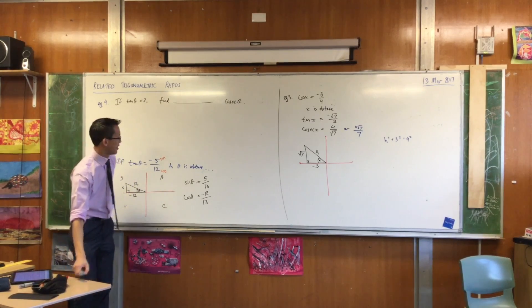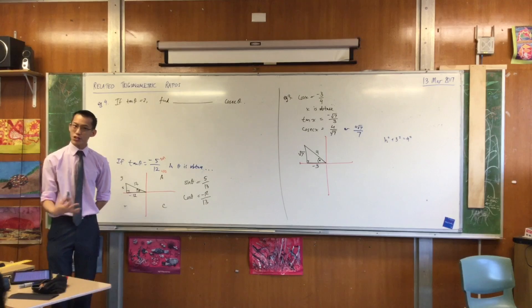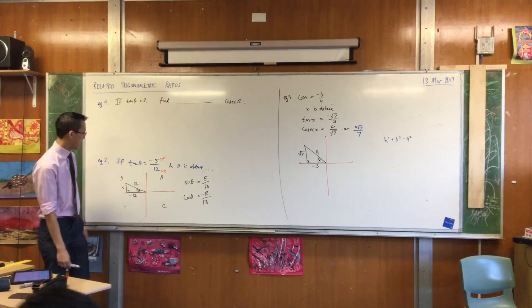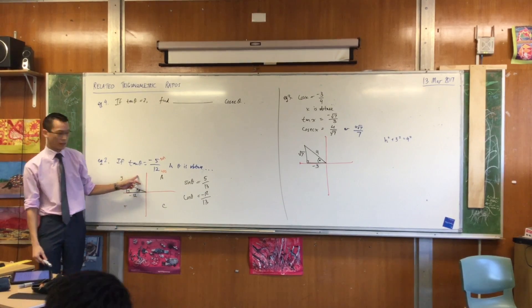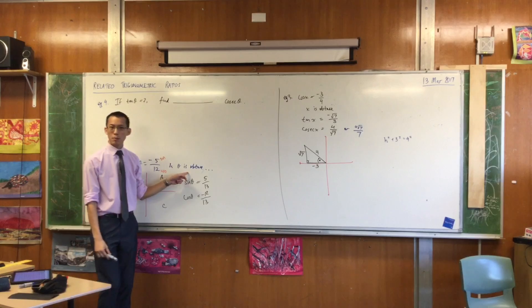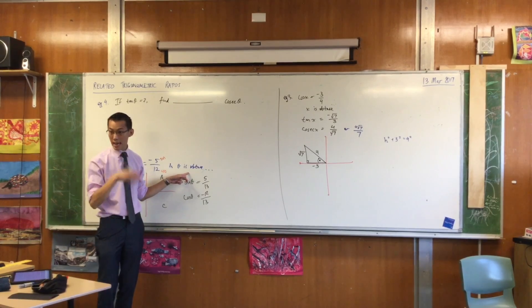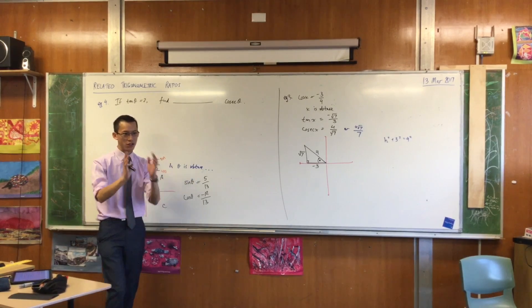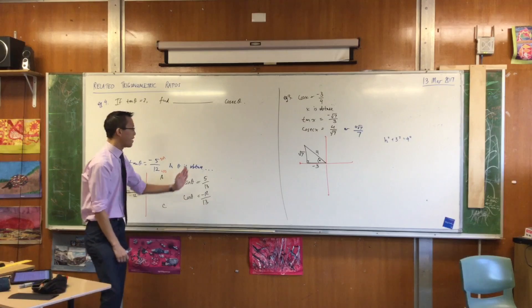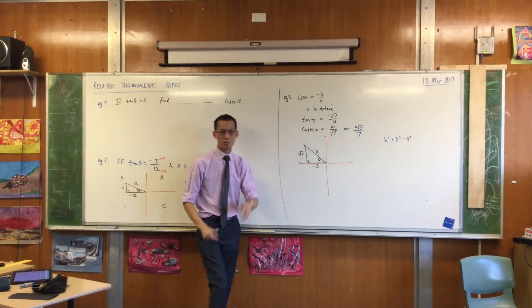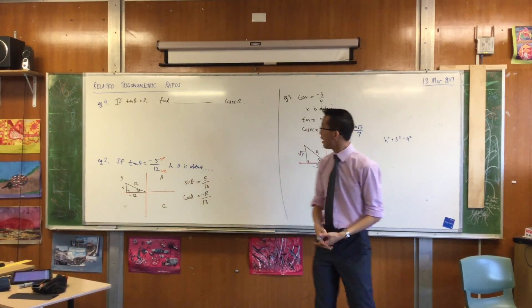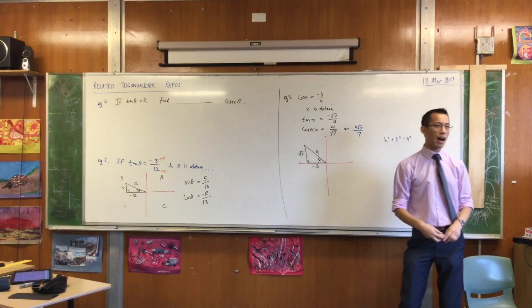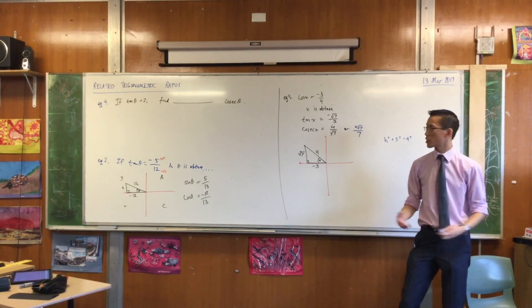Now, so far I've given you three examples, and every single one has been of the same format. They tell you some ratio, then they give you some kind of restriction on what the angle can be. They don't tell you what the angle is, but they tell you it's got to be between here and here. And then they say, find out some other ratios on the same angle. But this question over here, I've deliberately left something out. What's missing?